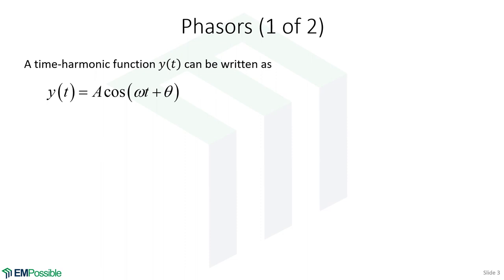Let's talk about phasors. Anytime we're using phasors, we're talking about functions that are oscillating harmonically — that means they're following a sine or cosine. I've defined a function y(t), varying as a function of t, written as an amplitude times a cosine. Inside that cosine there's a frequency omega multiplying time plus a phase.